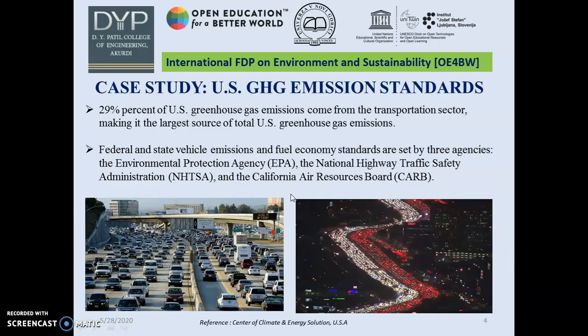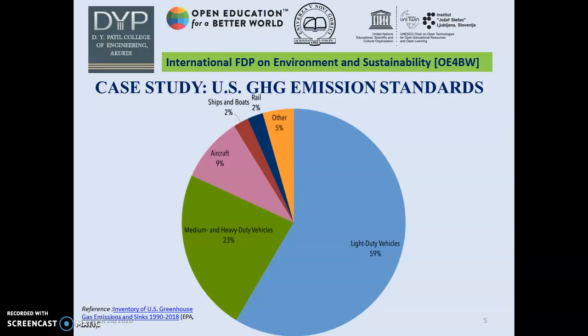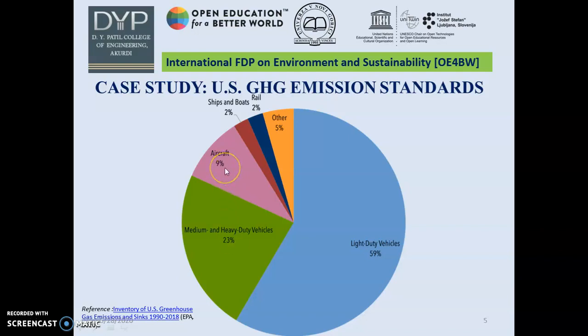CO2 emission is the most important concern from vehicles. Looking at the scenario in the US, 59% of GHG emissions are caused by light duty vehicles like passenger cars. Medium and heavy duty vehicles — such as transport goods vehicles or SUVs — cause 23% of greenhouse gas emissions. Aircraft cause 9%, ships and boats cause 2%, rail causes 2%, and other sources such as generators and fuel-powered equipment cause 5% of emissions.